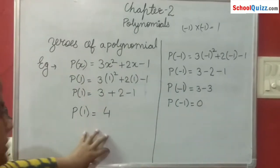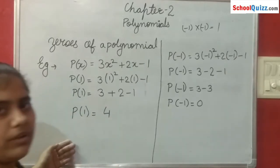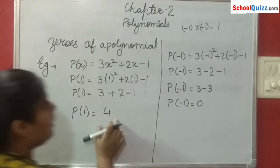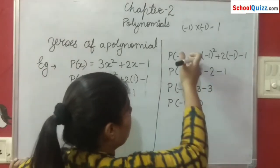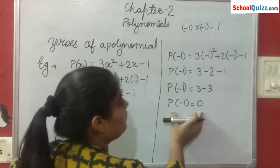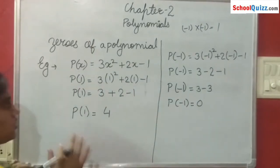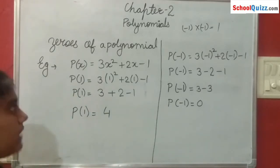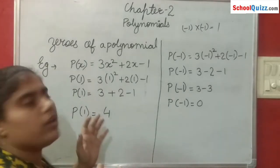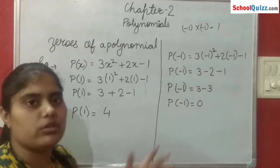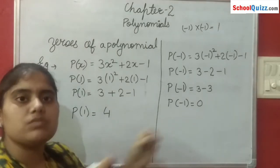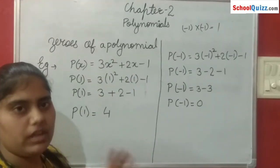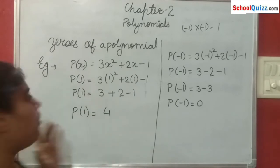When we replaced x with 1 in the equation we got 4. Again, when we replaced x with minus 1 in the same equation we got the value 0. So what we want to understand — zeros of a polynomial — that means جب ہمارا polynomial equation ہمیں 0 دے، جس value پہ variable کی ہمیں 0 value مل جائے polynomial equation کی، that is known as the zero of the polynomial.